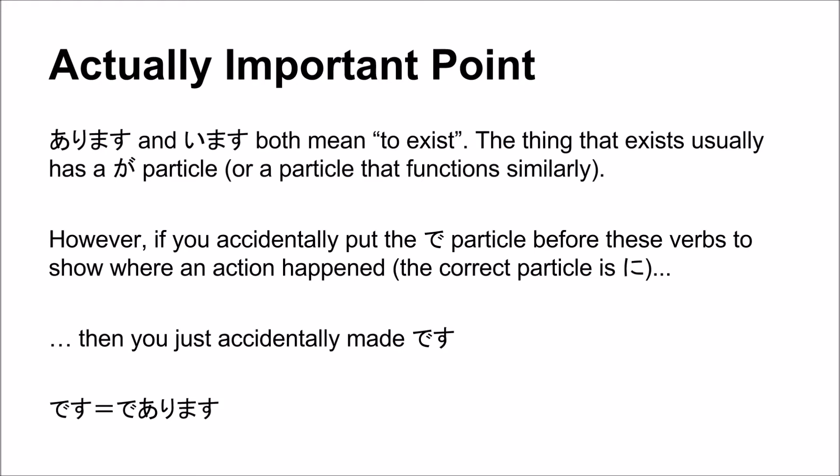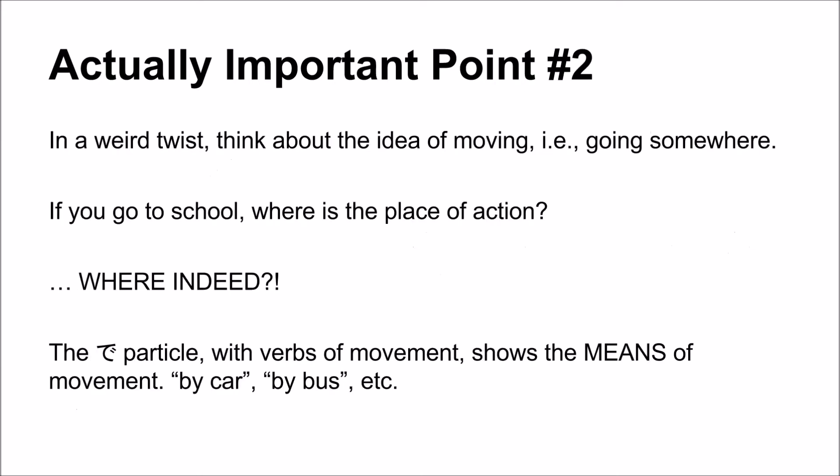However, if you accidentally put the で particle before these verbs to show where an action happened — the correct particle is に — then you just accidentally made です. Because です is the same thing as で あります. That's why when you make です negative, it's で は ありません, or じゃない です.